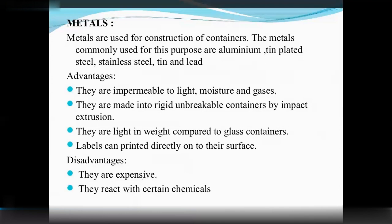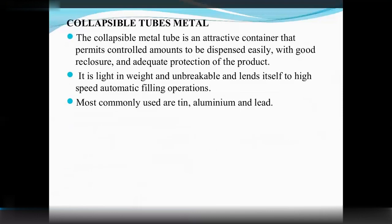Metals are used for the construction of containers. Metals commonly used include aluminium, tin-plated steel, stainless steel, and lead. Advantages: impermeable to light, moisture, and gases; can be made into rigid unbreakable containers by impact extrusion; light in weight compared to glass; and labels can be printed directly on the surface. Disadvantages: they are more expensive than glass and plastic, and metals can react with chemicals — reactivity is a major disadvantage. The collapsible metal tube is an attractive container that permits a controlled amount to be dispensed easily with good reclosure, is light in weight, unbreakable, and suited for high-speed automatic filling operations.